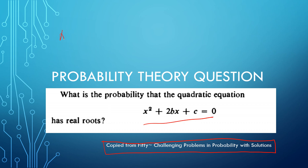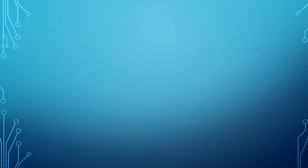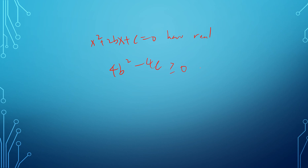What we need to assume is that we randomly choose b and c from the real numbers. In order for the equation to have real solutions, we need the discriminant to be larger than or equal to 0. So we need 4b² − 4c ≥ 0, which gives us b² ≥ c. This is the key condition.